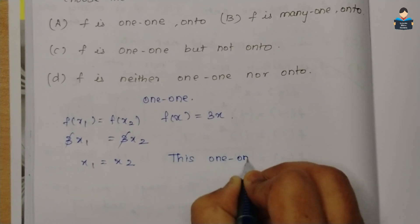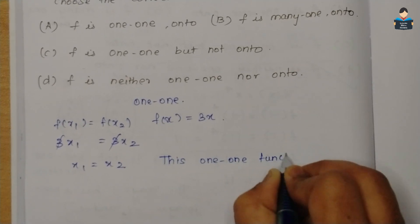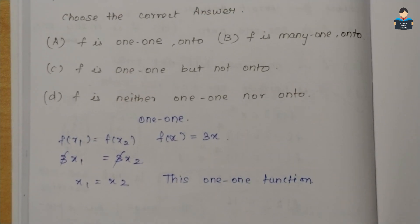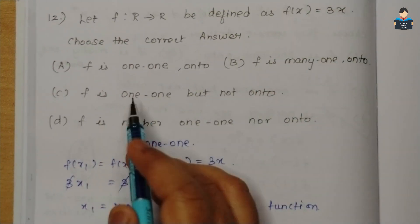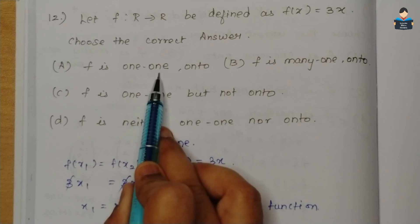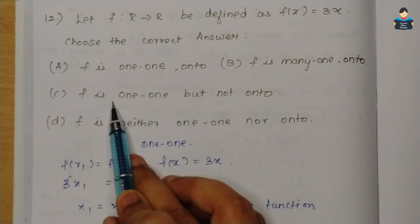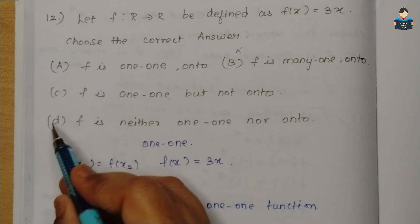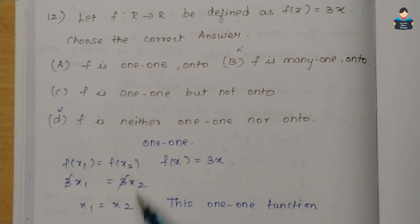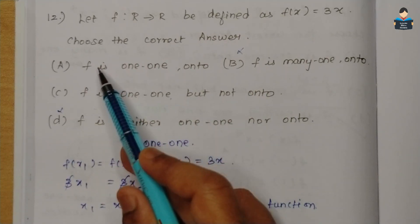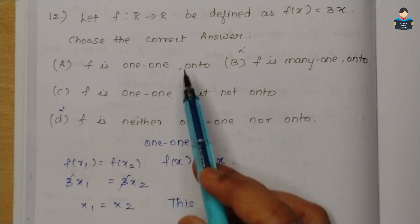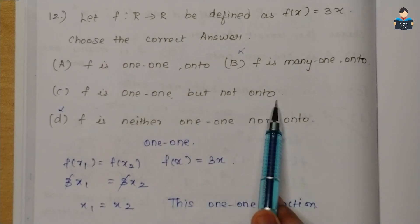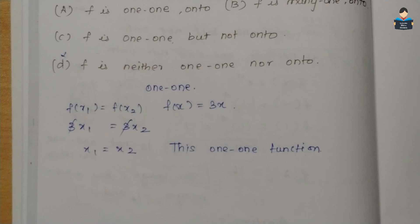Since f is one-to-one, we look at the options — option A and option C both include one-to-one. So option B is ruled out. Now we check onto to decide between A and C.